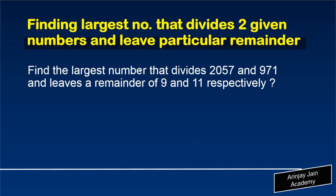Finding the largest number that divides two given numbers and leaves a particular remainder. We can use Euclid's division or the highest common factor to find the largest number which divides any two given numbers. Let's read the question: find the largest number that divides 2057 and 971 and leaves a remainder of 9 and 11 respectively.